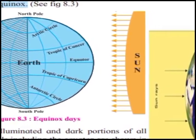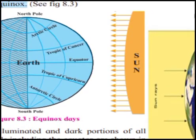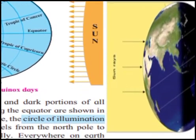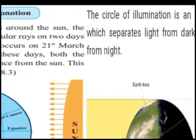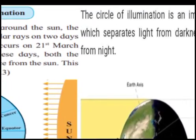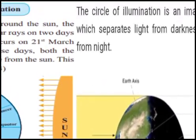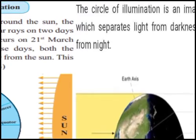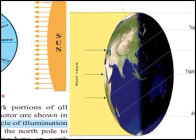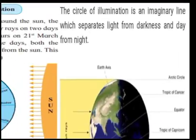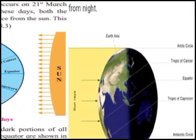On the slide you can see the equinox days — the sun and the perpendicular rays of the sun falling on the half part of the earth. You can see the circle of illumination here. The circle of illumination is an imaginary line which separates light from darkness and day from night, as shown in the figure.